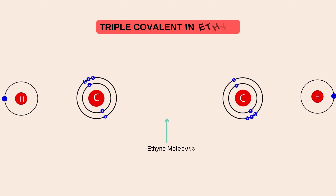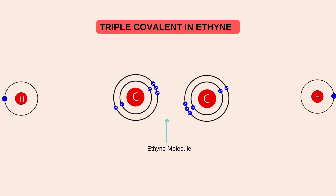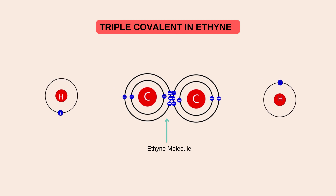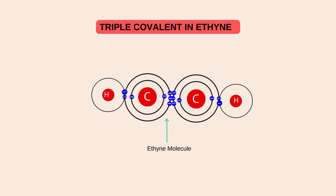Triple covalent bond ki dusri example ethine molecule ki hai. Ethine, jis se C2H2 se represent kiya jata hai. Is mein bhi carbon stability achieve kerne ke liye dusre carbon ke saat tien tien electron ki mutual sharing kerta hai aur triple covalent bond banata hai. Jabke baqi ek electron ki zarurat ko mukammal kerne ke liye, ya hydrogen atom ke saat single covalent bond banata hai, aur ethine molecule mein convert ho jata hai.